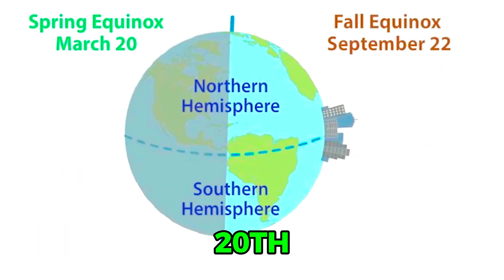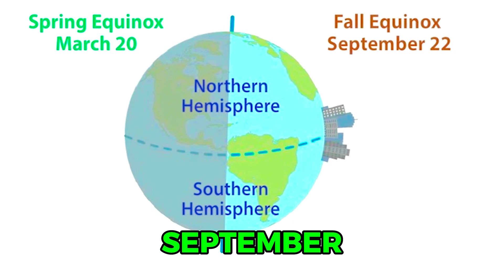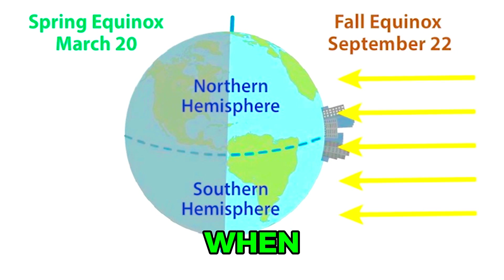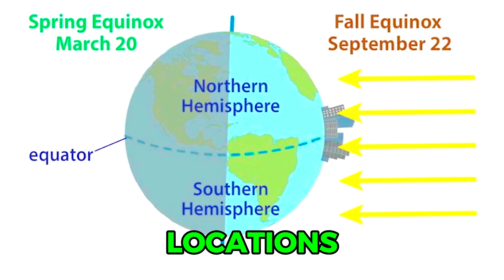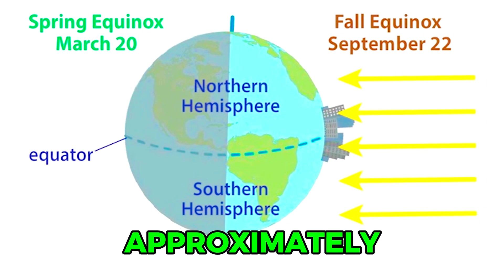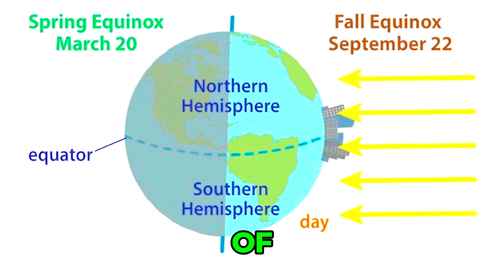March 20th and September 22nd are the equinox dates when the Sun's rays are directly hitting the Earth's equator. All locations on Earth experience approximately equal hours of day and night on these days.